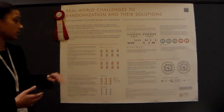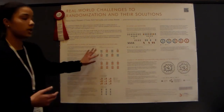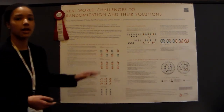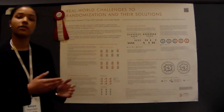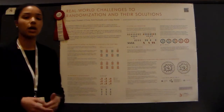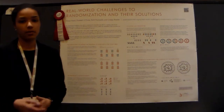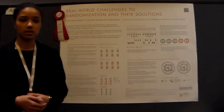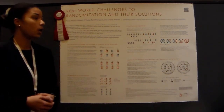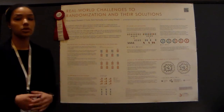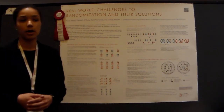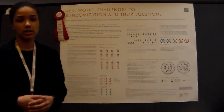In this design, researchers distributed computers to half the population in the first year, and at the end of the first year, the other half of the population was able to access the program, while still being able to determine the impacts of the program with an RCT.